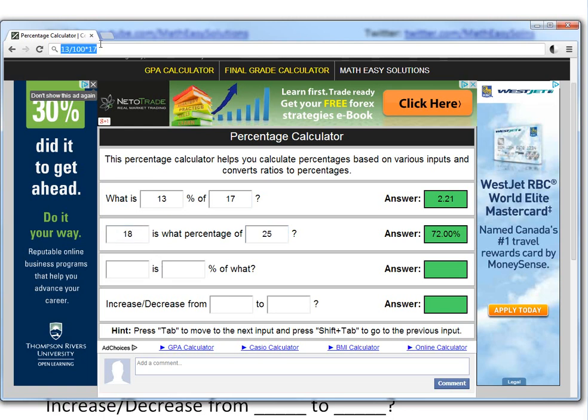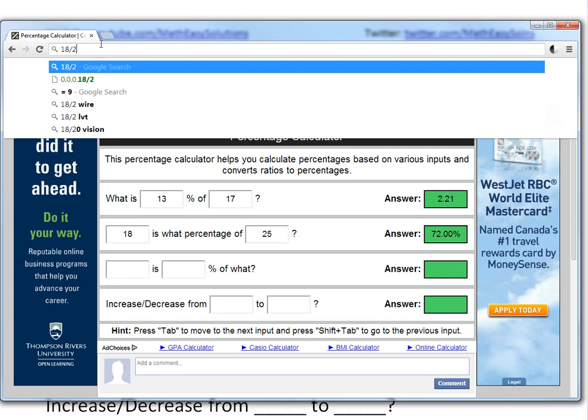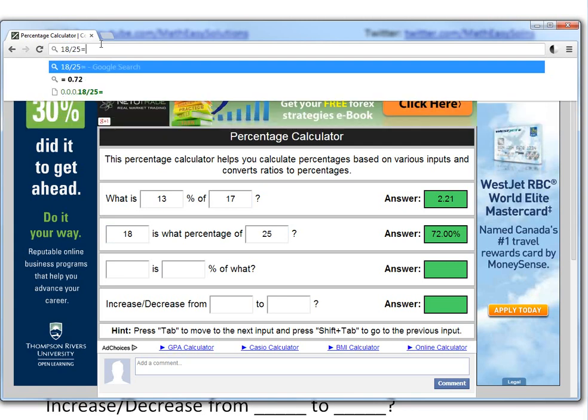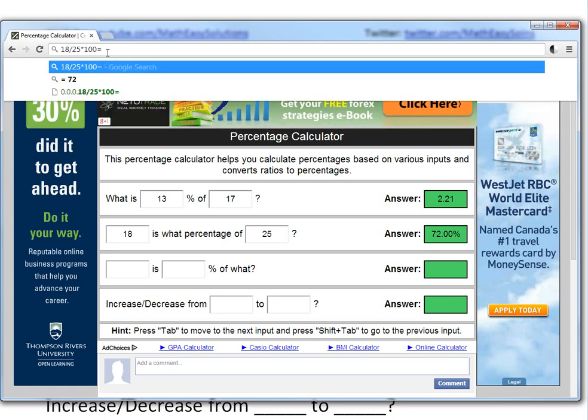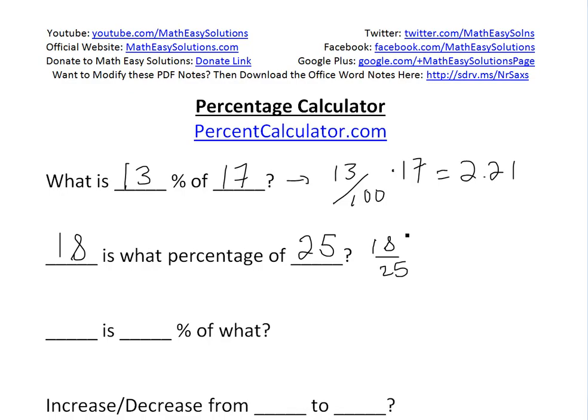Once again, you can go to Google Calculator to double-check. 18 over 25 equals 0.72, and then you times by 100, so there you go, 72 percent. To get back here, you would have to times by 100, you'll get 72 percent.